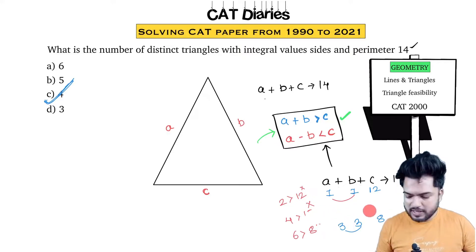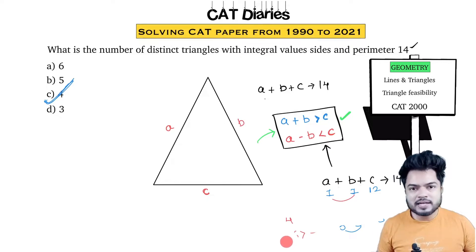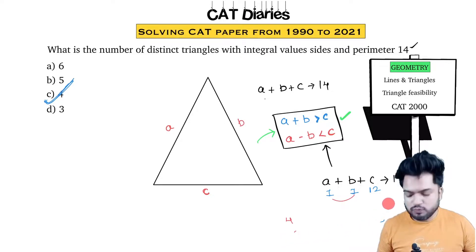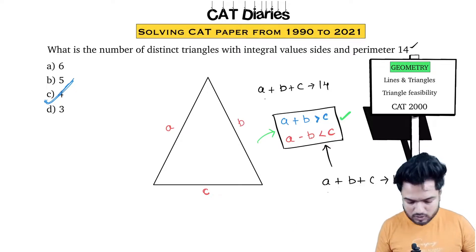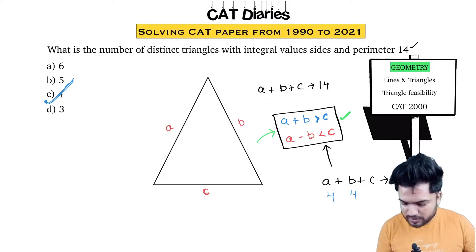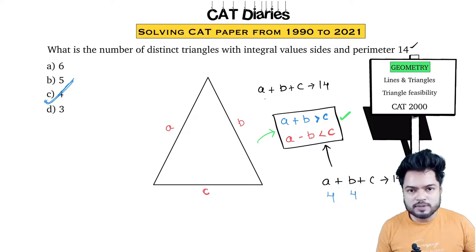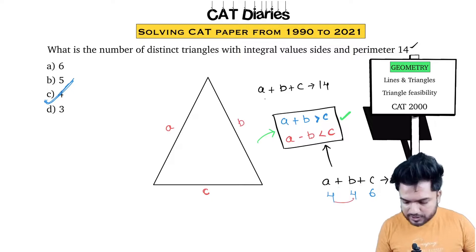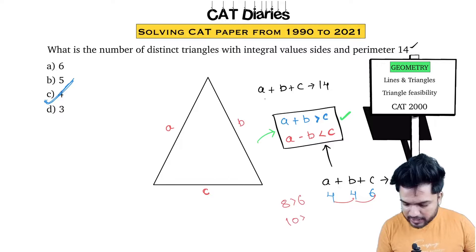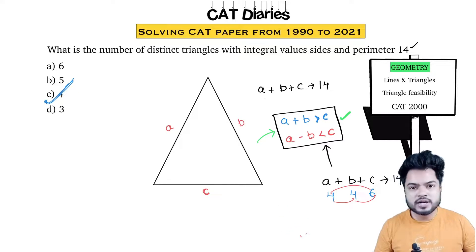So let's start with 4, 4. If one side is 4, the other is 4, that's 8, so the third has to be 6. Now check: sum of the two — 8 is greater than 6. Then 6 plus 4 equals 10, greater than 4. Then again 6 plus 4 equals 10, greater than 4. All conditions are satisfied — sum of the two is greater than the third side. So 4, 4, 6 is a valid triangle.